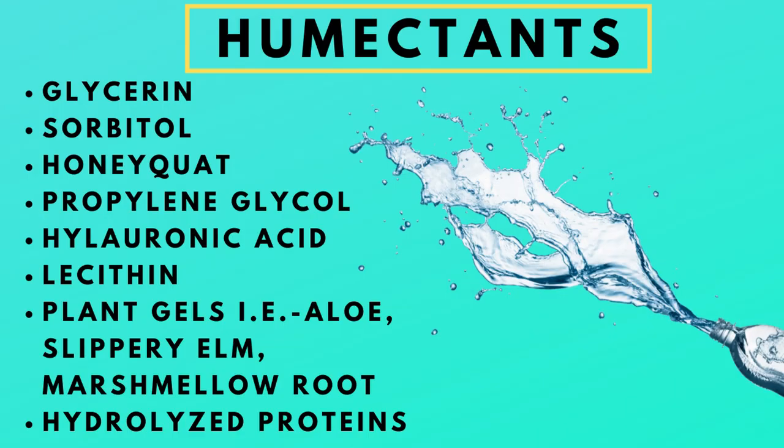Some of the common humectants you see in hair products are glycerin, honey or honeyquat, sorbitol, panthenol, hyaluronic acid, plant gels such as slippery elm, marshmallow root, and hydrolyzed proteins.